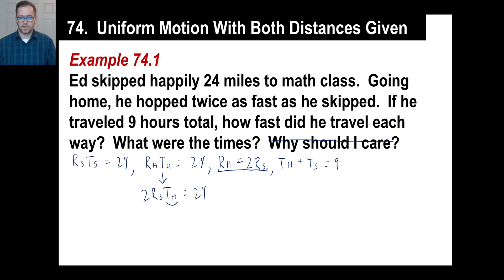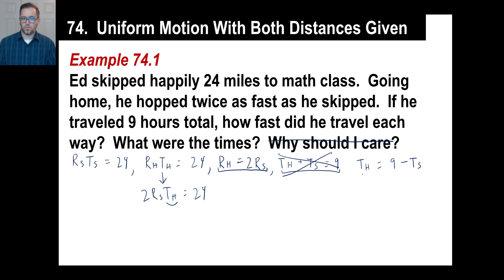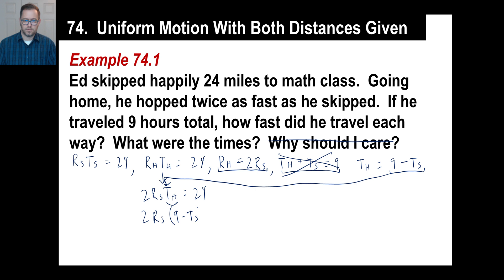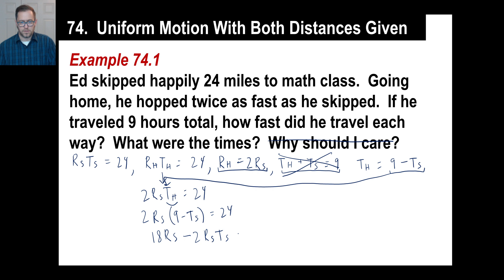T sub H — we can find that. T sub H is nine minus T sub S, i.e., nine hours minus the time of skipping. So let's put that right in here. We've got two times the rate of skipping times the quantity nine minus the time of skipping. That gives us 18 R sub S minus two R sub S times T sub S equals 24.